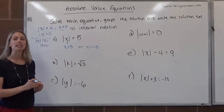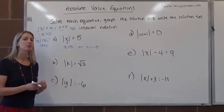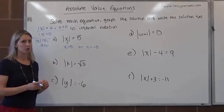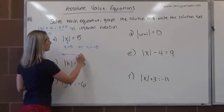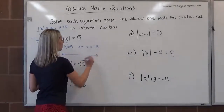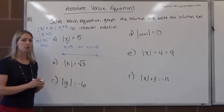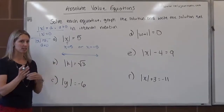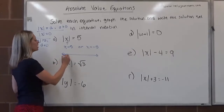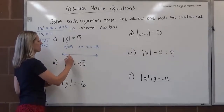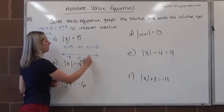However, the directions do ask us to graph and write in interval notation. When we're graphing an absolute value equation, we use a number line, not a coordinate plane. It's just one dimension. I can set up the intervals however I please, I just need to make sure that I'm consistent with my tick marks. So I can say this is going to be negative 5, then 0, and then 5.